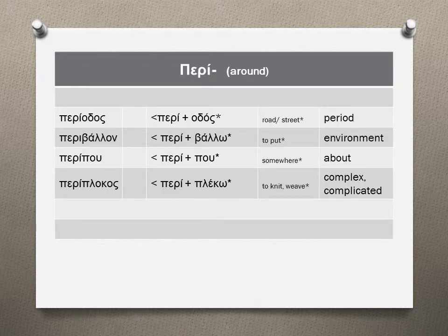It's time now to look at the PERI prefix. PERIODOS, meaning period, comes from PERI and ODOS, meaning road or street. PERIODOS means literally the time frame within which incidents occur in a repetitive way. PERIVALON, meaning environment, is what is placed around us — the root word VAZO means to put, to place.